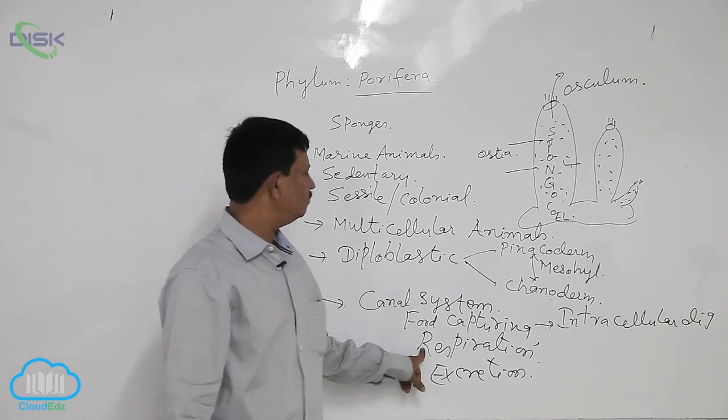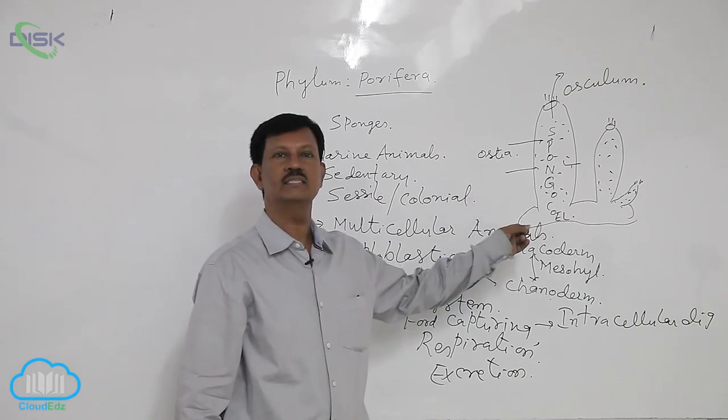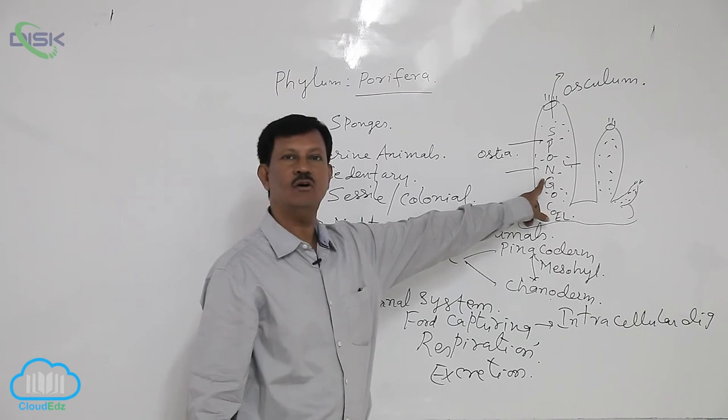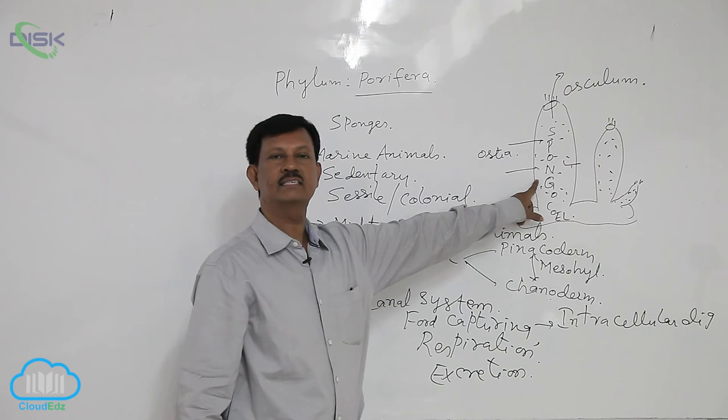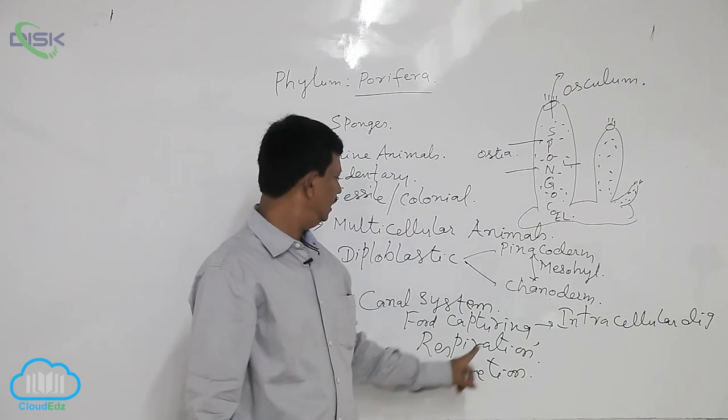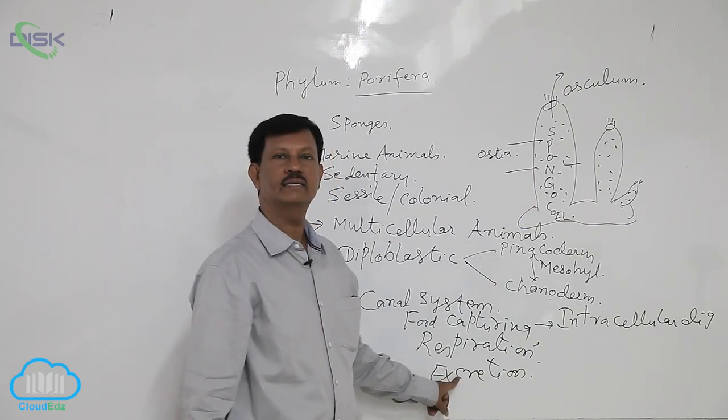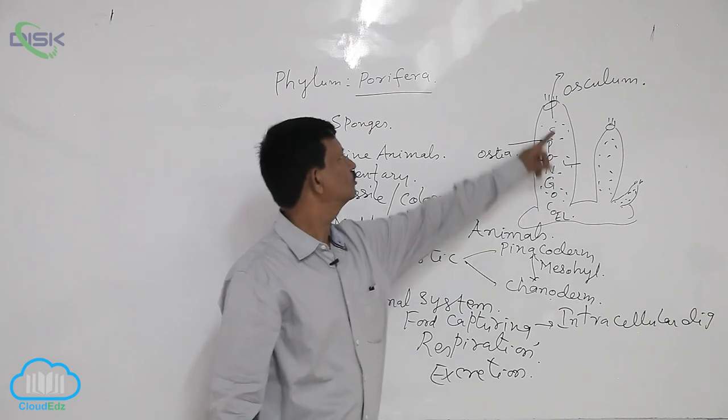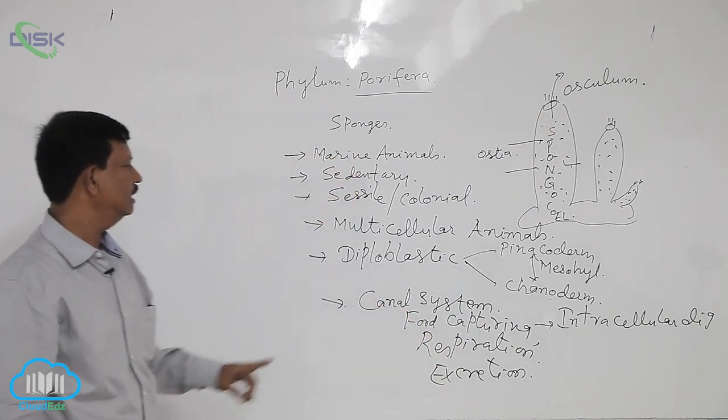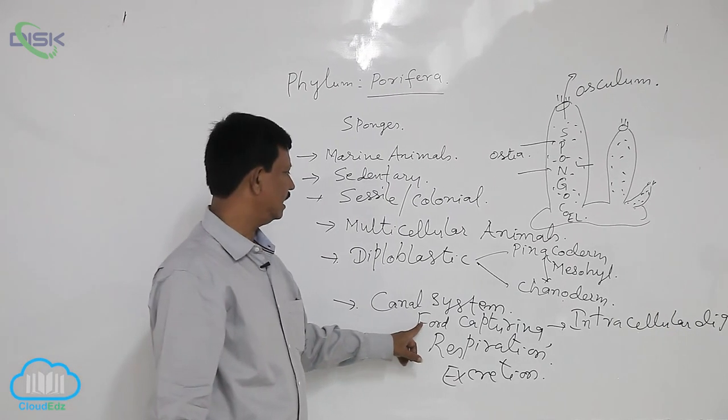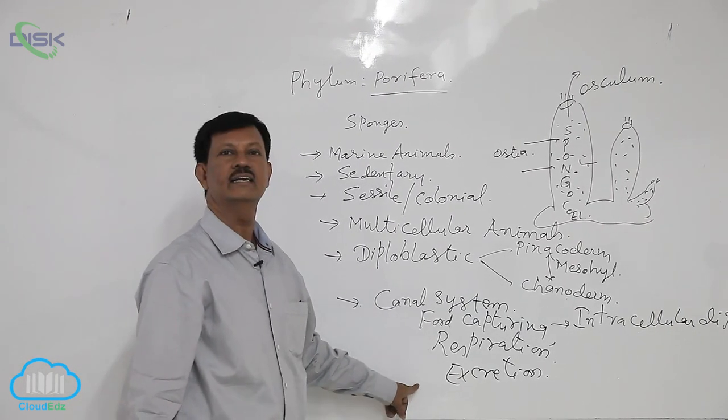In the marine water, dissolved oxygen is present. The organism absorbs the oxygen from the water, and various types of metabolic activities take place inside the body. Waste products like ammonia and carbon dioxide are sent out through the osculum. That is why the canal system is very important for the organism for nutrition, respiration, and excretion.